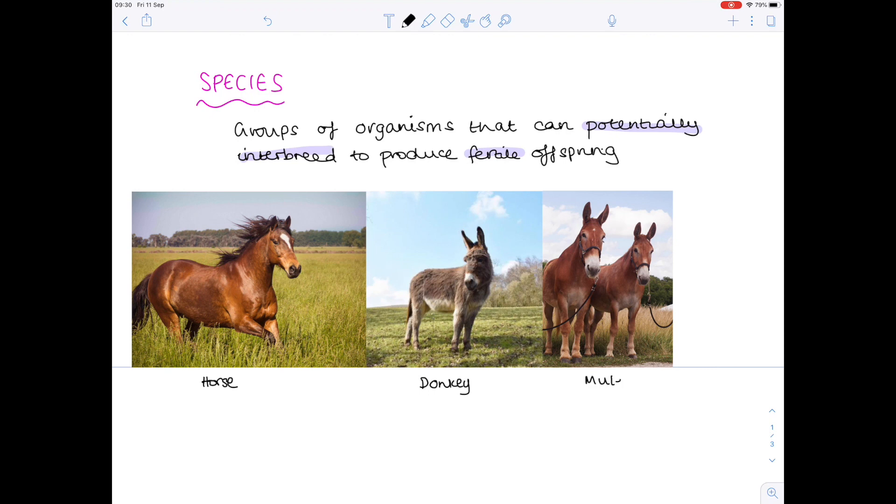Now, mules are sterile. They are infertile. They cannot successfully breed. And for that reason, horses and donkeys are separate species. So, make sure you're aware of why that definition is so important.